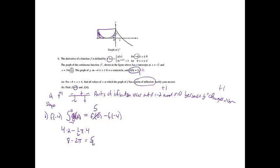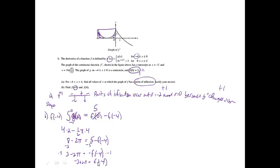So 8 minus 2π equals 5 minus f of negative 4. Subtracting 5 from both sides gives 3 minus 2π equals negative f of negative 4. Multiplying both sides by negative 1, f of negative 4 equals negative 3 plus 2π, or 2π minus 3. That was worth 2 points: one for setting up the integral, one for the correct answer.